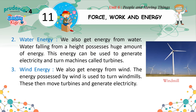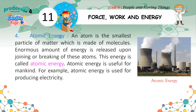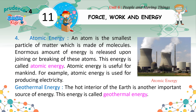Water Energy: We also get energy from water. Water falling from a height possesses a huge amount of energy. This energy can be used to generate electricity and turn machines called turbines. Wind Energy: We also get energy from wind. The energy possessed by wind is used to turn windmills, which then move turbines and generate electricity. Atomic Energy: An atom is the smallest particle of matter. Enormous amount of energy is released upon joining or breaking of these atoms. This energy is called atomic energy.